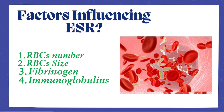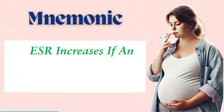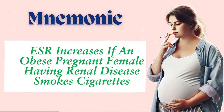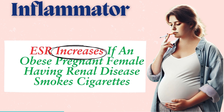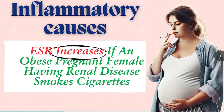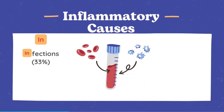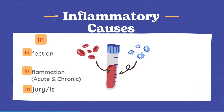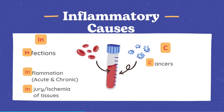Causes of high ESR — the mnemonic. ESR increases if an obese pregnant female having renal disease smokes cigarettes. Let's break it down. Inflammatory causes: Infections — the most common cause of elevated ESR. Inflammation — includes both acute and chronic processes. Injury or ischemia — tissue damage like in myocardial infarction. Cancer — includes malignant neoplasms and paraproteinemias like multiple myeloma.